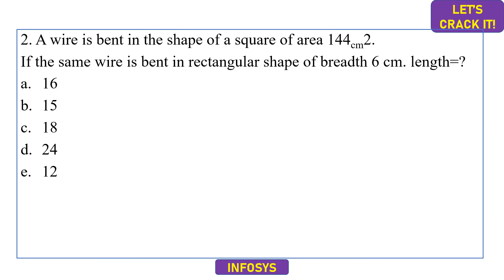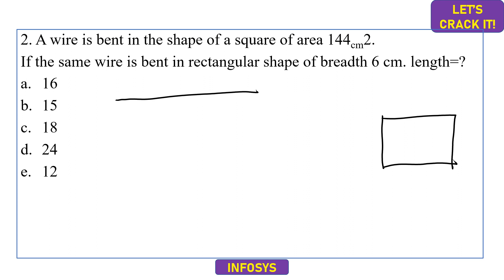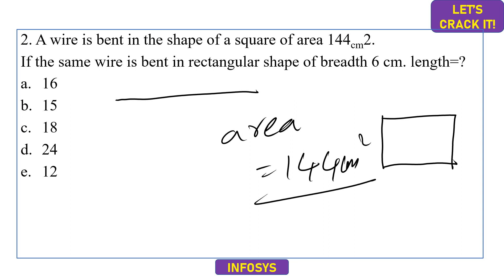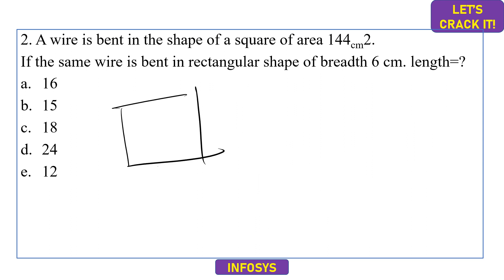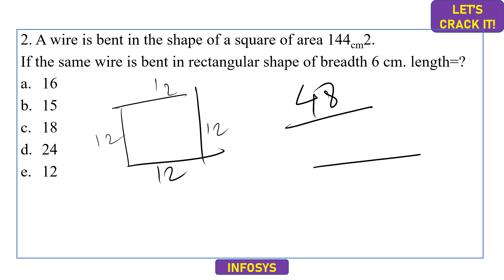The second question: a wire is bent into the shape of a square with area equal to 144 cm². Taking the square root, the side is 12 cm. Each side is 12 cm, so the perimeter is 4×12 = 48 cm. The same wire is then bent into the shape of a rectangle — the perimeter remains constant at 48 cm.